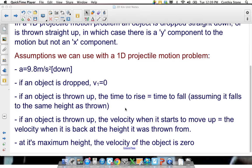If an object is thrown up, the velocity when it starts to move up is the velocity when it's back at the height. So basically, when you catch it again, it's moving the same speed as it was when it left your hand. And when it gets to the top, it has no velocity for a fraction of a second, an instant, as it turns around.